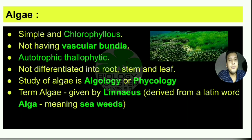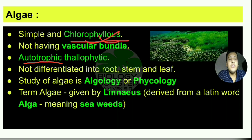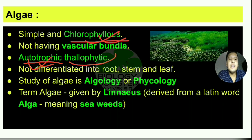The next thing about algae is they are autotrophic. Since algae contain chlorophyll, they are able to make their own food, and that's why they are autotrophic in mode of nutrition. They make their own food, and they are thallophytic.